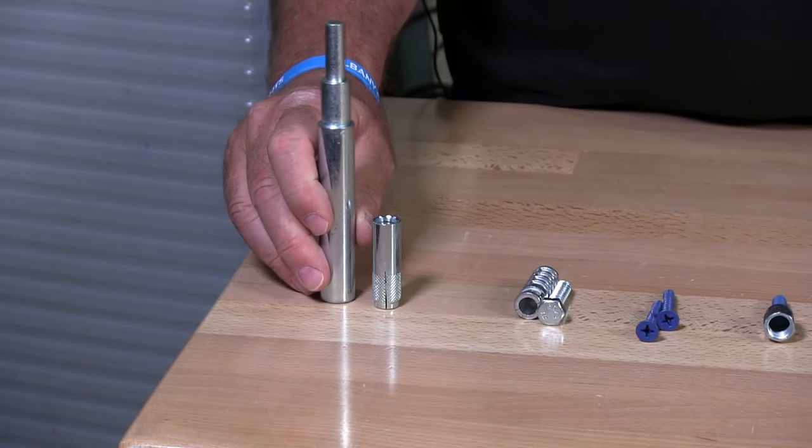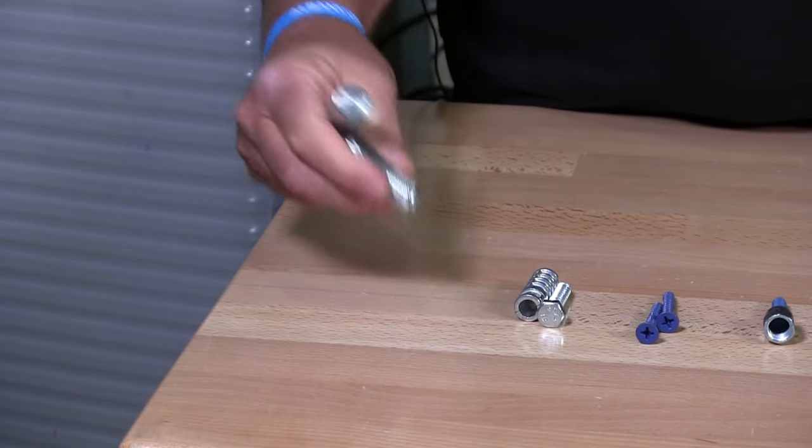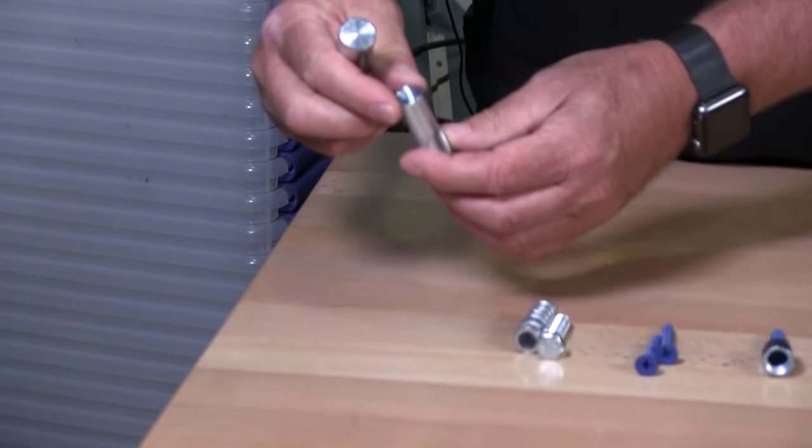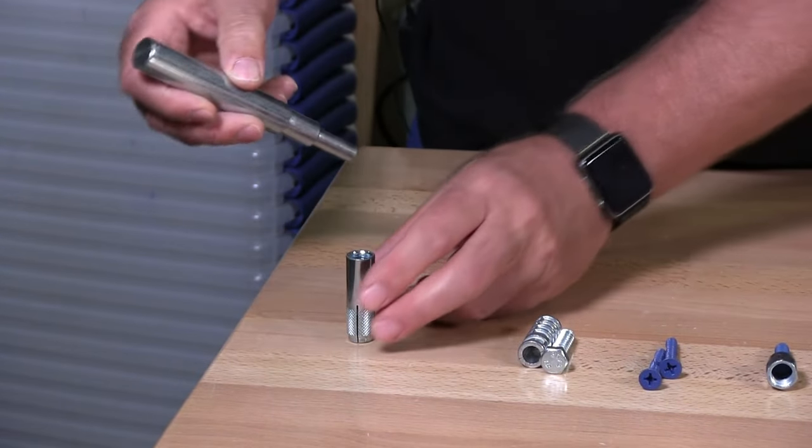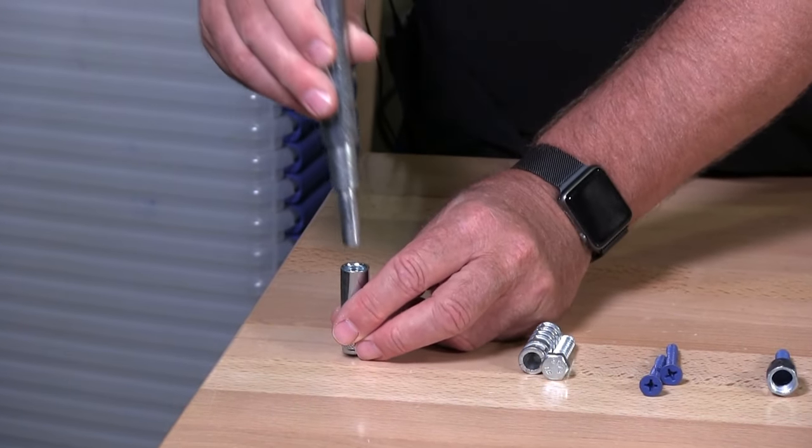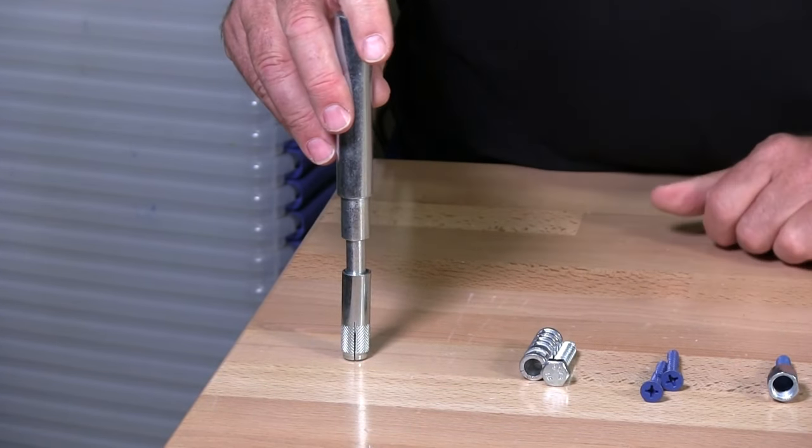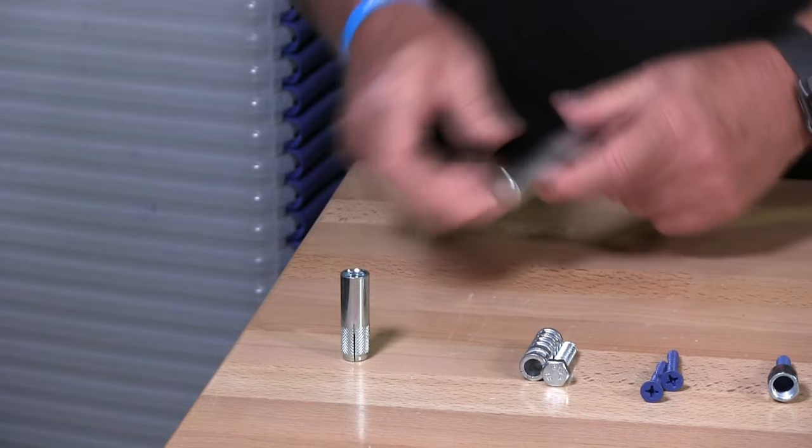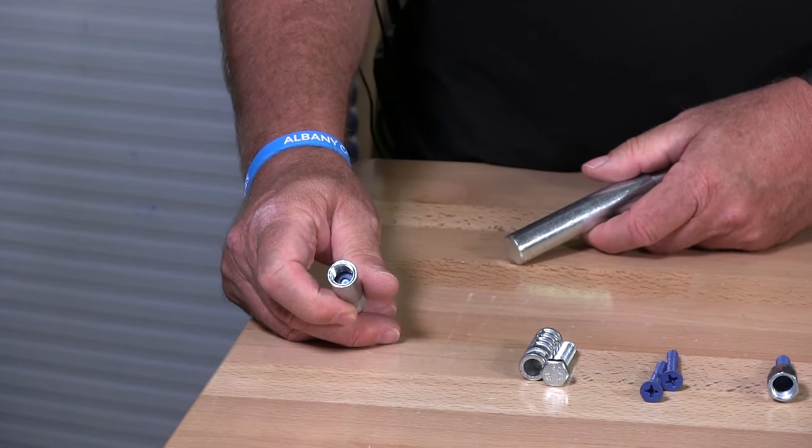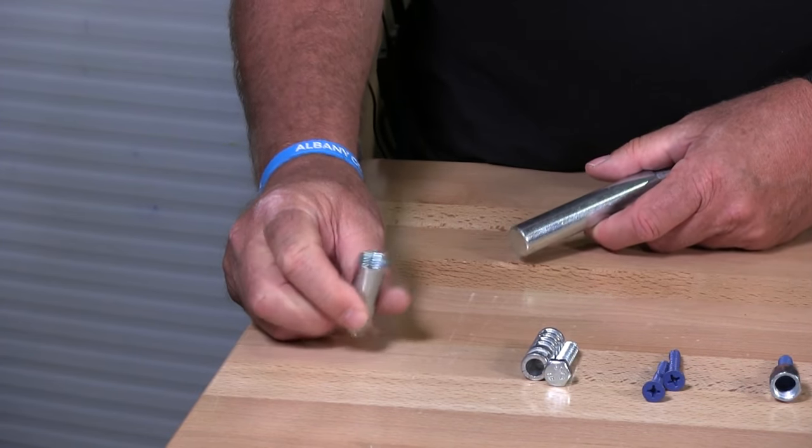This tool is a set tool to set the drop-in anchor. Once you have the drop-in anchor in the hole, you put this tool, hit it with a hammer, and it sets it in position. Then you can drive in your bolt, whatever you're fastening to the concrete.